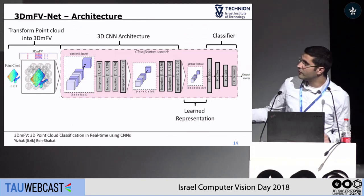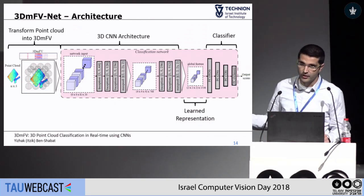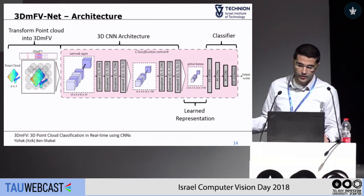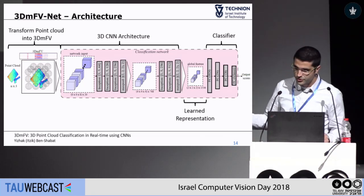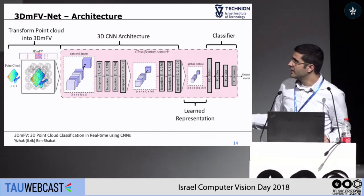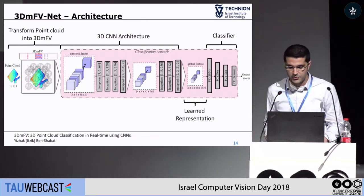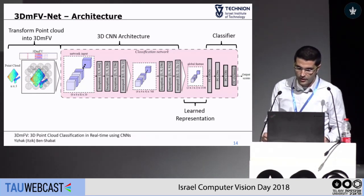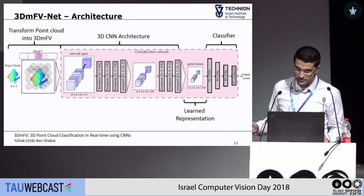Once we compute the 3DMFV representation — taking the point cloud as input, placing our Gaussians on it, and computing the representation — we can feed it into a 3D convolutional neural network architecture designed for classification. It's composed of multiple 3D inception-inspired layers, and in the end we get what we call a learned representation that we feed into a fully connected classifier.